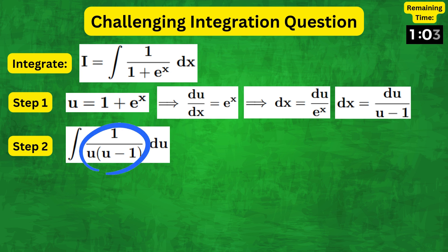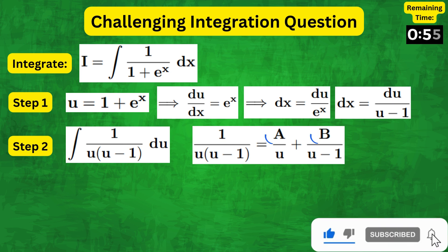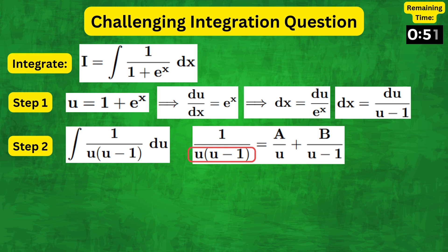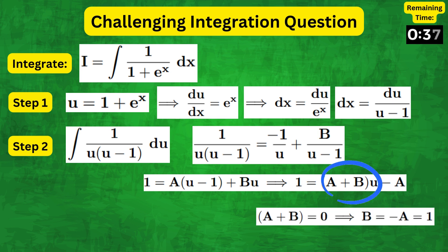We need to use partial fraction decomposition to split this fraction in the form a over u plus b over u minus 1. To solve for a and b, we multiply both sides by u(u minus 1). Comparing coefficients, looking at the constant terms, we get a equals minus 1. Since there is no u term on the left, a plus b must equal 0, and therefore b equals 1.